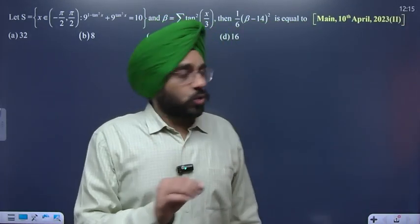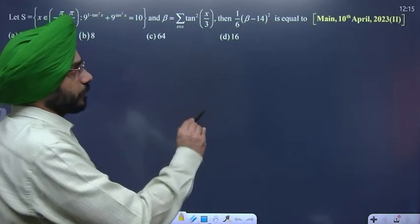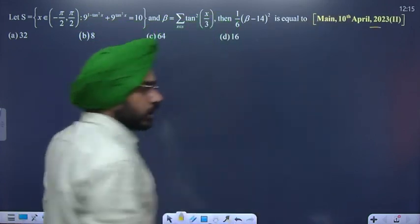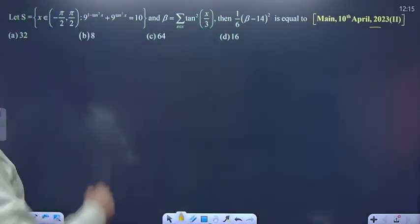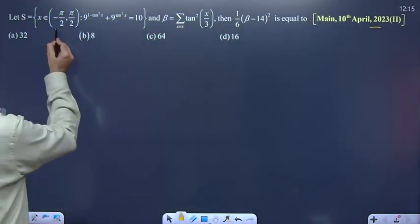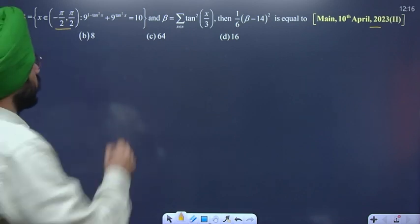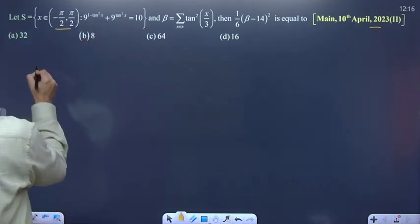Students, today this quadratic question is a little mixed with trigonometry. It is a question of April 2023. There is a given term that x is between minus pi by 2 to pi by 2, and the quadratic is given with trigonometry.